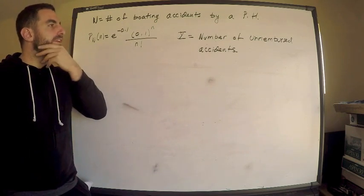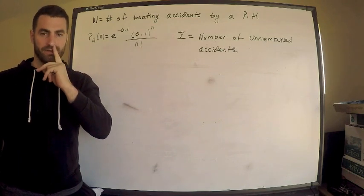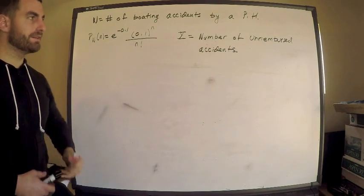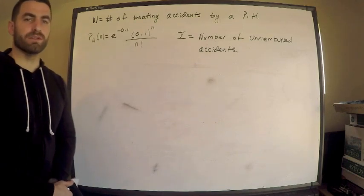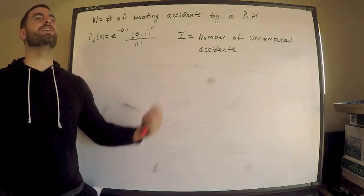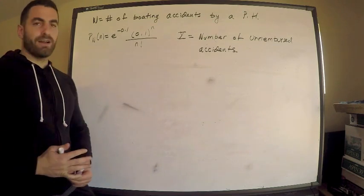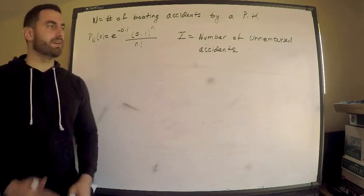Y represents the number of unreimbursed accidents. So you need to be a little bit careful, what is actually reimbursed? We're told the insurance only kicks in for the very first accident, so nothing else is compensated. He better not crash more than once, or she, right?